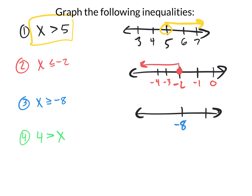For x ≥ -8, put negative 8 in the middle. To the right you have negative 7, to the left you have negative 9. This is going to be a solid dot because it has a solid line underneath the inequality. Solid dot at negative 8, and since it says greater than or equal to, greater than is to the right, so you go that way.